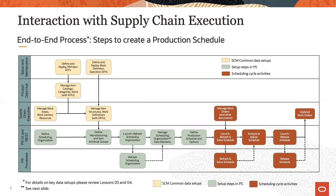In setup and maintenance, item EFFs and work definition operation DFFs must be defined and deployed. These correspond to user-defined attributes that production scheduling can utilize. In product hub, you manage item catalogues, item categories, and items. In supply chain execution, work areas, work centers, resources, and work definitions are maintained and work orders are managed.